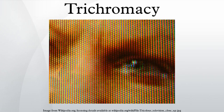Trichromacy or trichromaticism is the condition of possessing three independent channels for conveying color information, derived from the three different cone types. Organisms with trichromacy are called trichromats.